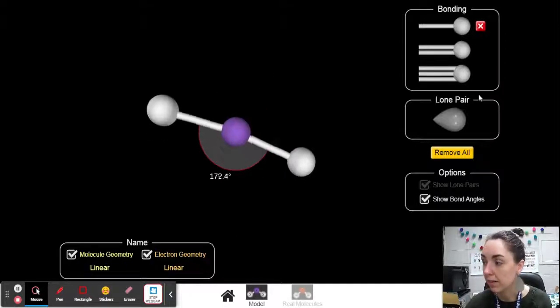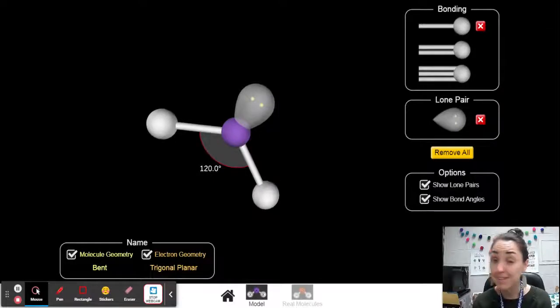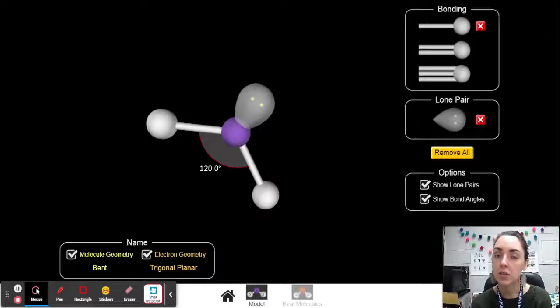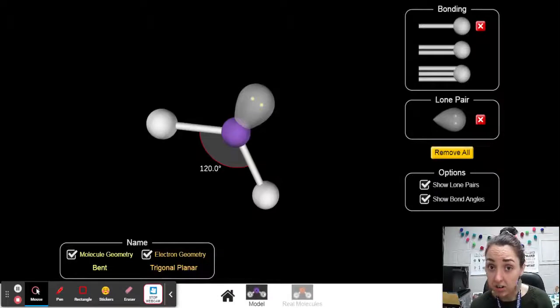Now, if I get rid of one of these bonds and replace it with a lone pair of electrons, that's a pair of electrons that's not shared. It's just on its own, a lone pair of electrons. You'll notice my bond angle is still 120 degrees. So whether it's electrons shared in a bond or electrons in a lone pair, they're acting the same. They're still repelling each other.